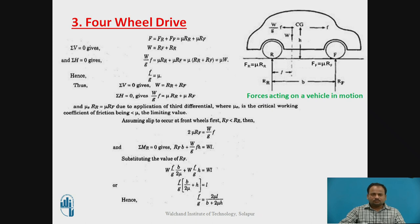Next, drive is given to all wheels. Therefore, total tractive effort F equals FR plus FF, where FR and FF are mu times RR and mu times RF respectively. Taking vertical forces equal to zero gives W equal to RR plus RF. Taking horizontal forces equal to zero: W by G times F equals mu times (RR plus RF). Taking mu common, RR plus RF equals W, therefore the equation becomes mu times W. Cancelling W, we get F by G equals mu — the maximum acceleration for all-wheel drive.